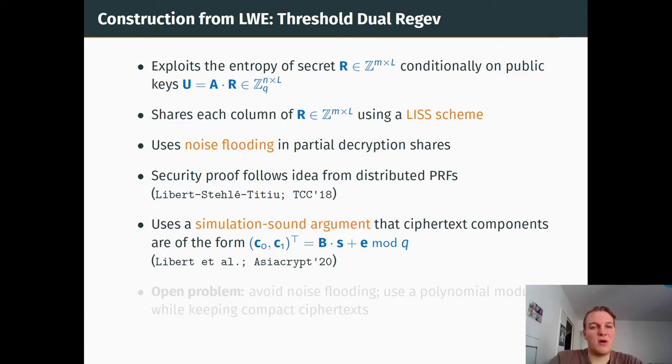Finally, to give you a quick idea on how we build threshold public key encryption from dual-regev, we have the following remarks. First, if you remember how dual-regev is made, you take a random, the secret key is some random matrix, and the public key is two matrices A and U, which is A times R, and even conditionally on U and A, the secret key R still has a lot of entropy, which is important for us. As you may have guessed, we share each column of the secret key using a LISS scheme. Then, when someone wants to encrypt, it encrypts as in the dual-regev non-threshold case.